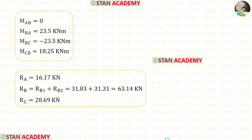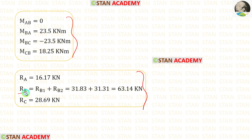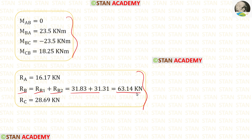In this analysis we have calculated all of the moments and reactions. To get RB, we add RB1 and RB2, giving RB = 63.14 kN.